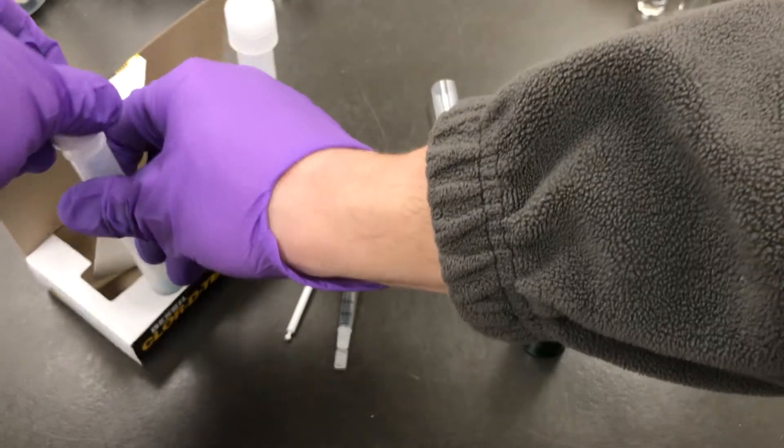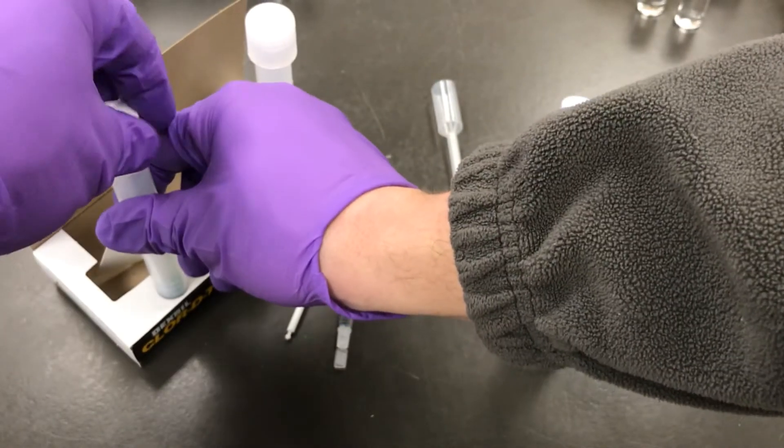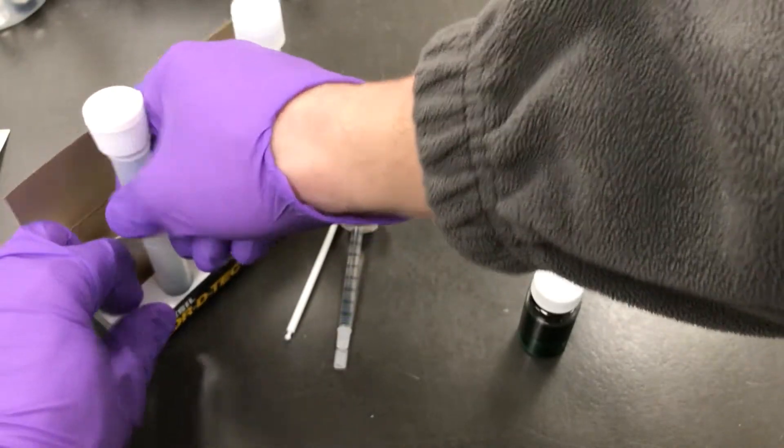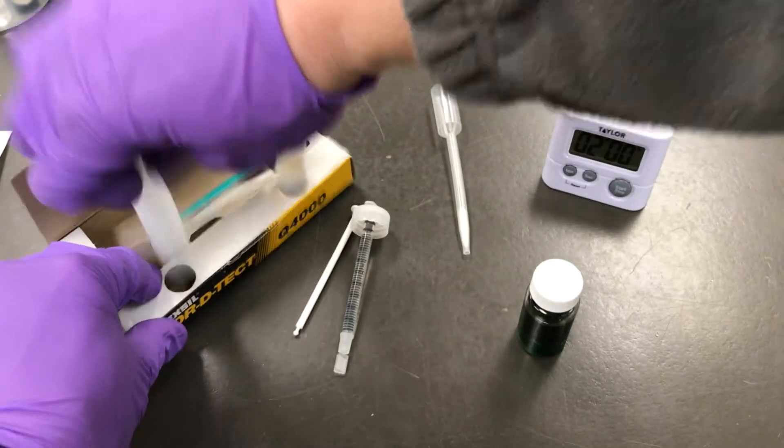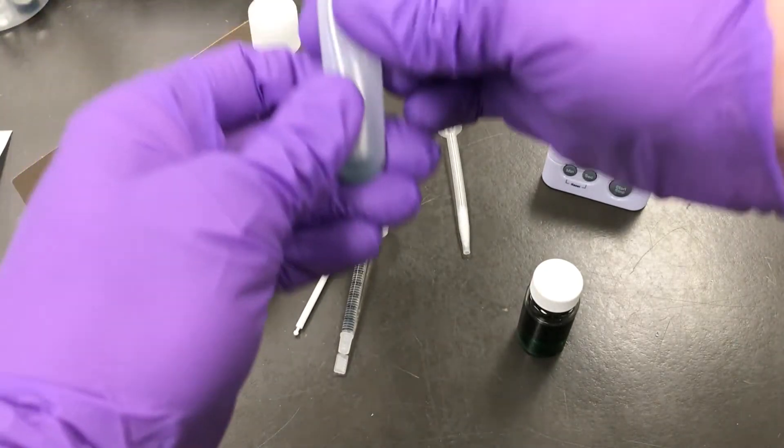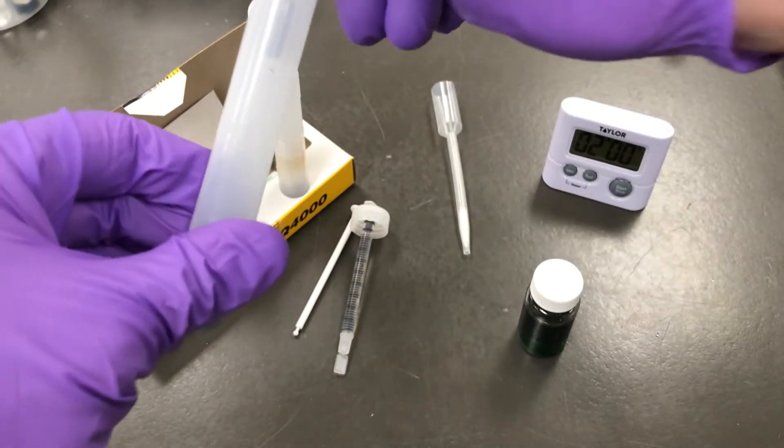Wipe off any excess oil and dispense the oil into test tube one. Replace the cap on test tube one. Squeeze the sides of the test tube to break the bottom colorless ampule and shake it for 30 seconds.